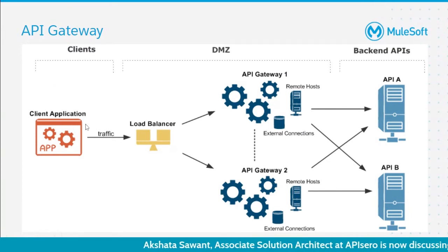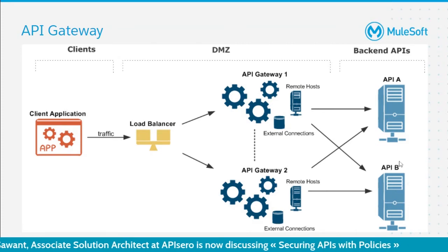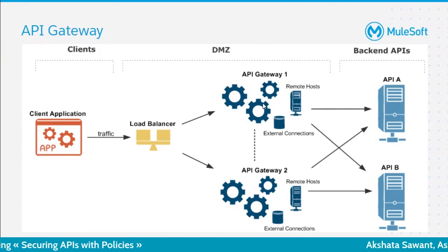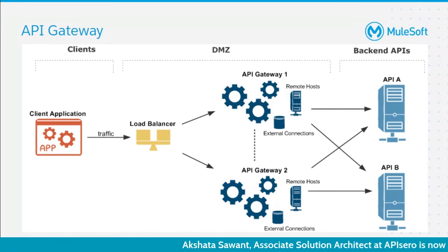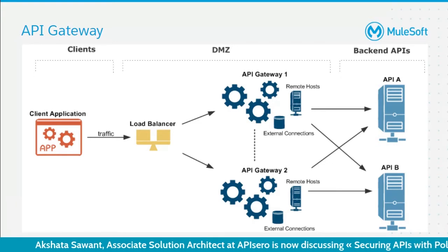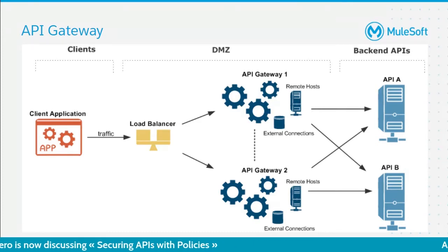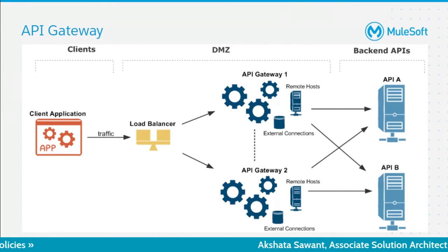Normally, a client application or API will send a request which will first be received by the API Gateway before it goes to the backend systems and backend APIs. Once received by the API Gateway, the policies we have implemented — security policies — will be applied. There are different kinds of policies you can apply on your API Gateway, but today we'll mainly talk about security policies.